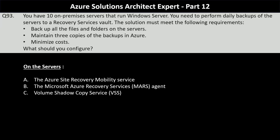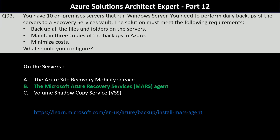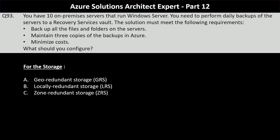Azure Backup uses the MARS agent to back up files, folders, and system state from on-premise machines and Azure VMs. These machines can be backed up directly to a recovery services vault in Azure. For the storage option, your choices are geo-redundant storage, locally redundant storage, and zone-redundant storage. You will need to use locally redundant storage, as you need to maintain three copies of the backup while minimizing costs.